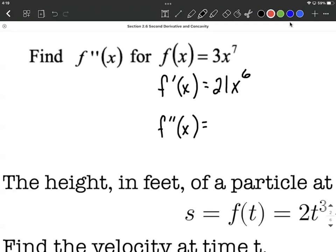So again, we're going to use the power rule, bring the exponent down, multiply 6 by 21, get 126, reduce the exponent by 1, and our second derivative is going to be 126x to the 5th power.